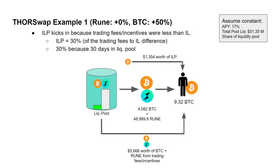Impermanent loss protection also kicks in because trading fees and incentives were less than the impermanent loss — fees were under $6,000 while impermanent loss was about $10,000. The protection is 30% because I provided liquidity for 30 days (1% per day), applied to the difference between trading fees and impermanent loss — not the total impermanent loss. That calculation comes out to $1,354 worth of impermanent loss protection in Bitcoin, bringing my total to 9.32 Bitcoin, still down from the 10 I initially deposited.